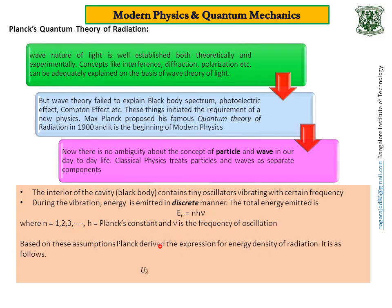Based on these assumptions, Planck could derive an expression for energy density. It is of this form: u lambda d lambda equals 8πhc by lambda to the power of 5 into 1 divided by e to the power of hc by lambda kT minus 1 into d lambda. Dear students, in Planck's theory, we have the revolutionary concept called discreteness that is quantization of energy.